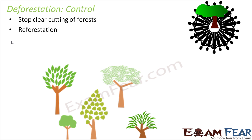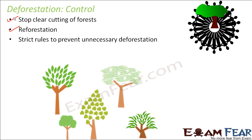Reforestation is an important control measure. If we cut down trees in one area due to necessity, we can compensate by planting more trees elsewhere — for example, planting trees along the sides of highways so that even within human settlements there are enough trees to offset carbon dioxide levels and reduce soil erosion. Additionally, strict rules should be established to prevent unnecessary deforestation — for example, if the government imposes heavy fines for cutting a single tree, people will be afraid to cause deforestation.